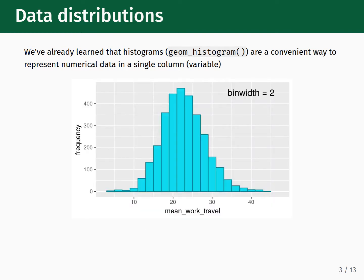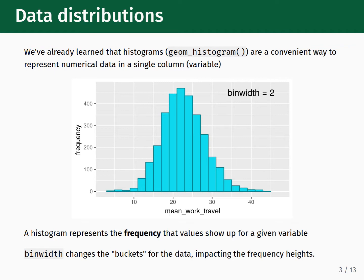We glossed over this point in our earlier lectures, but the heights of the bars in a histogram plot represent the frequency that different values show up for a given variable. You can think of the different bars as representing buckets for us to place our data in, and the heights tell us how many data points are currently in each bucket. While this is a convenient and intuitive way to visualize a data distribution, the width of these buckets, called the bin width, is an adjustable parameter that we have to set.